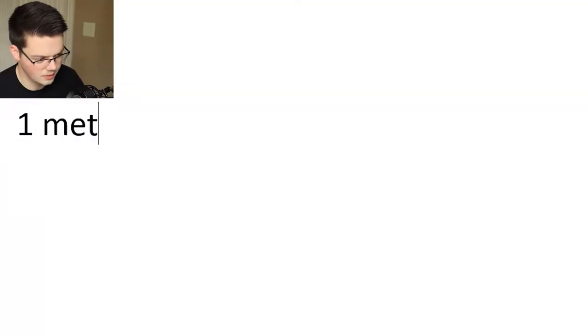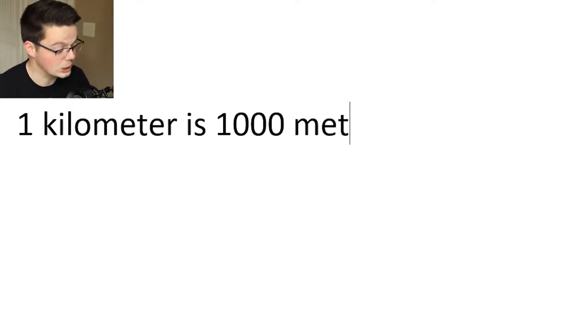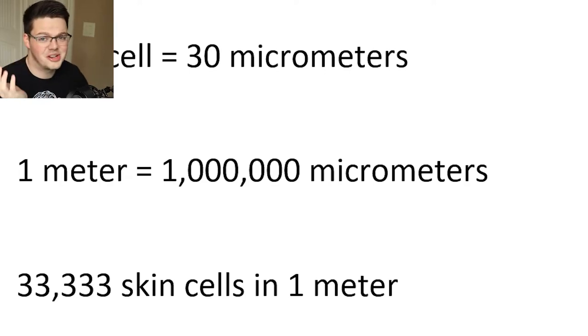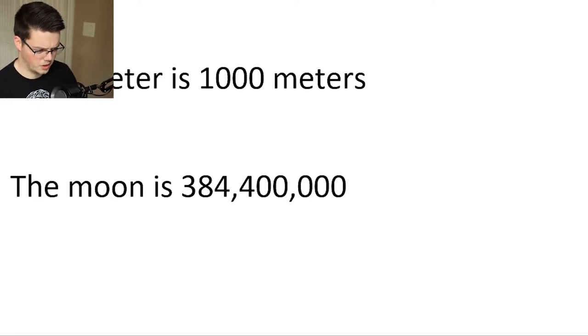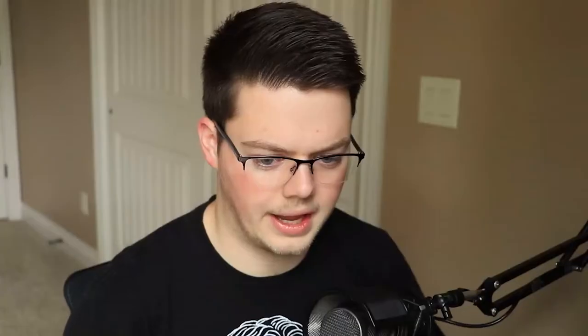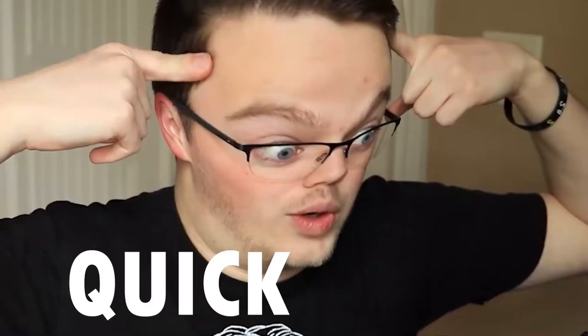One kilometer is 1,000 meters — we're using the metric system, get over it Americans — so we just multiply by 1,000. The moon is on average 384,400,000 meters away from Earth. Now we multiply that by 33,333 skin cells per meter. Going big brain for this one, using the calculator: 384,400,000 times 33,333.